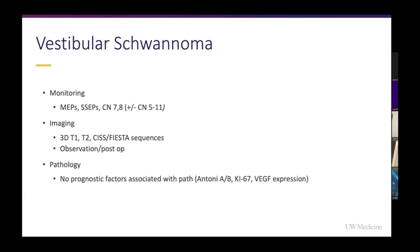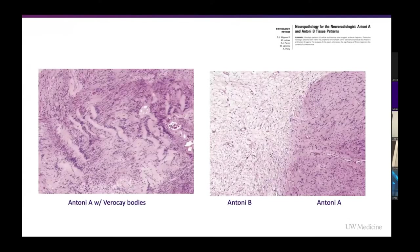For vestibular schwannomas: the majority are sporadic, and most harbor NF2-inactivating mutations. The pathognomonic findings are the Antoni A and Antoni B regions in peripheral nerve sheaths and the Verocay bodies. The difficulty in histologic diagnosis back then was likely because of these two distinct cellular architectures within the specimen. In 1920, Swedish neurologist Dr. Antoni published his findings on these two distinct areas. Antoni A regions tend to burn out and form Antoni B. Verocay bodies are more predominantly seen in spinal schwannomas than vestibular schwannomas.